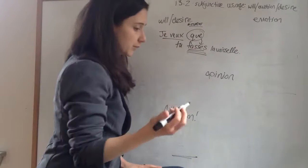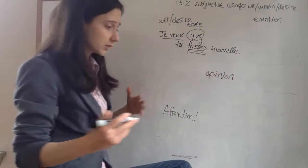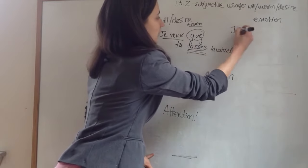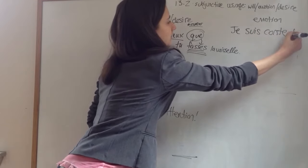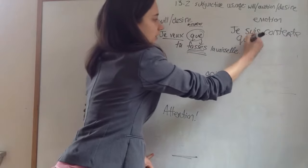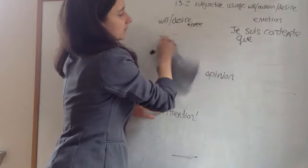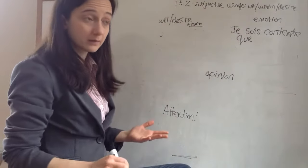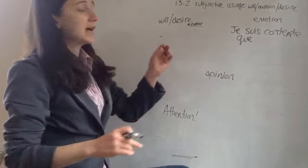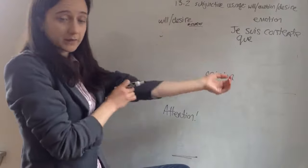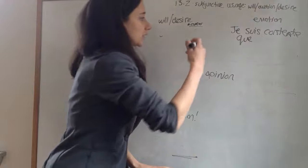Next we have emotion, and this one's really pretty simple, except now we just have emotion. So we're going to say, let's put an emotion. Je suis content or contente que. So we have an emotion here. I am happy, right? I am sad, I am disappointed. We have an emotion, and now we're having a separate person involved, a separate or just a separate subject, just not I again.